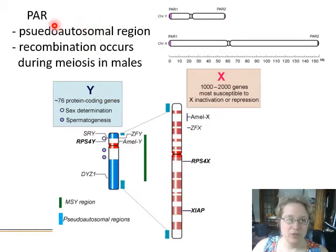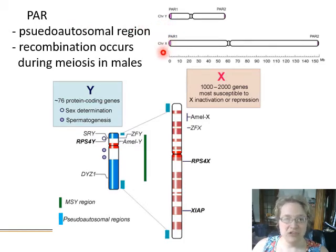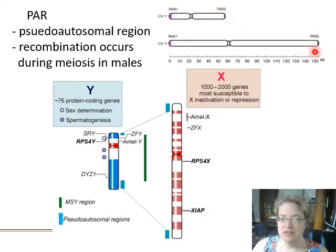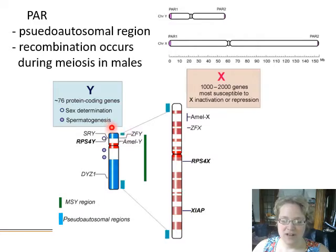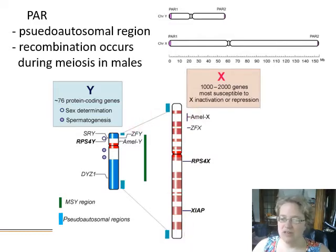There is an interesting region called the pseudoautosomal region, or PAR for short, that occurs on both the X and Y chromosome. Actual chiasma-forming recombination occurs during meiosis in males — during sperm formation, these chromosomes line up and PAR1 and PAR2 exchange genes. The sex-determining region is within that pseudoautosomal region, and the SRY gene has been documented to occasionally switch — being recombined onto an X chromosome.